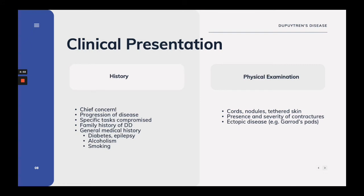Dupuytren's disease is a clinical diagnosis, therefore a thorough history and physical examination must be performed. Understand what is the patient's chief concern and the reason they've decided to come in now. Identify the progression of their disease thus far. Ask questions regarding the patient's functional limitations both at home and at work — things such as combing hair, putting their hands in their pockets or gloves, driving or playing sports can all be affected. Obtain a family history. A thorough general history is important as Dupuytren's has been associated with conditions such as diabetes, epilepsy, and is related to alcohol consumption and smoking.